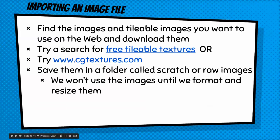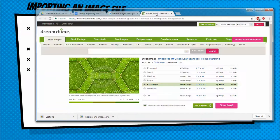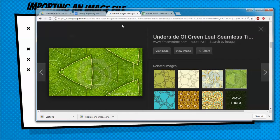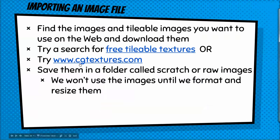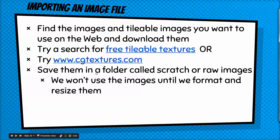You can do a search for free tileable images and start finding images that are tileable. You can look at websites to find them — you might have to pay for some. Grab the images you want and save them in a folder called Scratch or Raw Images, but we won't use those until we format and resize them. Hit pause, get your images, and then we can continue.